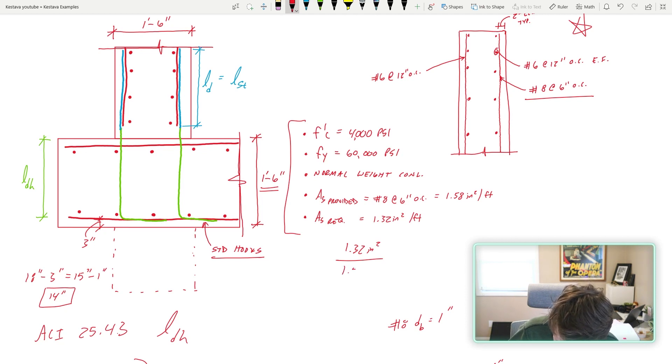That means you could say we only need 1.32 inches squared per foot of steel, but instead we actually put in 1.5 inches squared and we're trying to develop that fully. Well in reality we don't need the full development strength of the bar that we provided. We only need, we're only utilizing 84% of that steel, so we really only need 84% of our development length in order to meet our requirements.